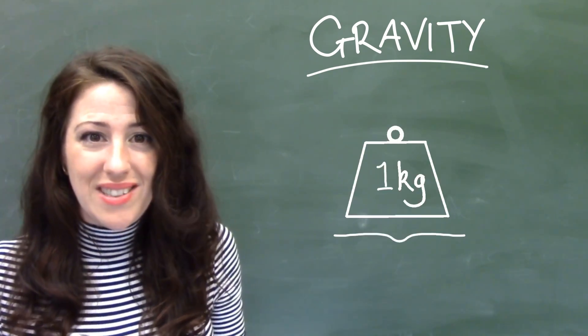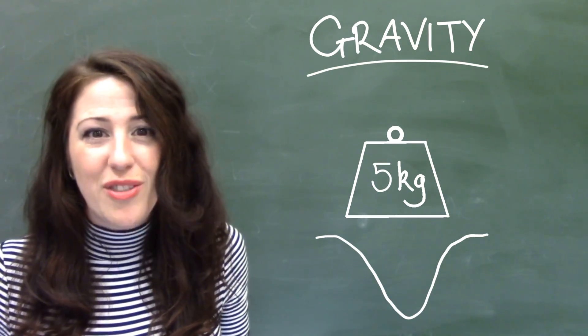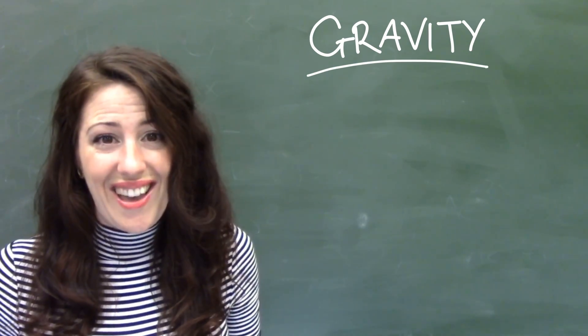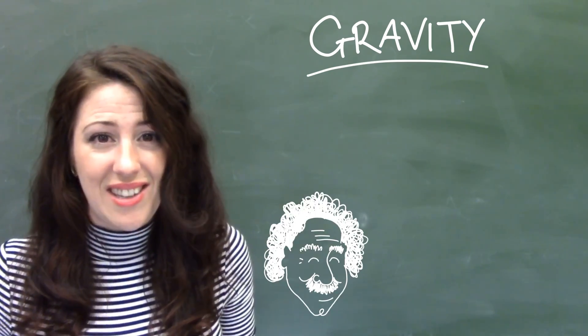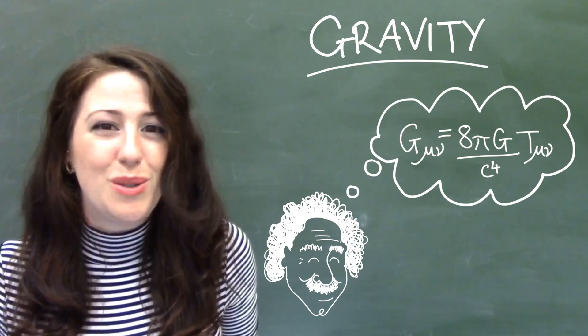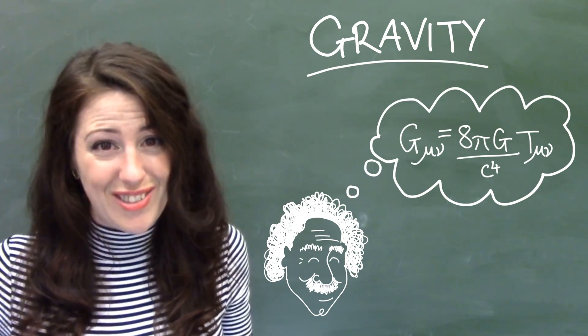The more mass something has, the more it bends spacetime, the stronger the gravitational force. It was this insight into gravity that led Einstein to create his general theory of relativity, which was to have far-reaching consequences.